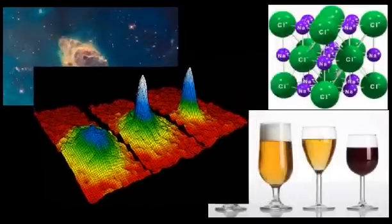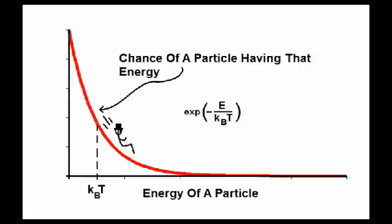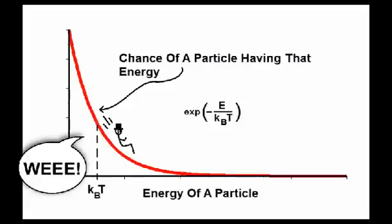You may ask, what exactly do I mean when I say that atoms in a hotter system have more energy? Physicists learned a long time ago that the energy distribution of particles at a given temperature follows something called the Maxwell-Boltzmann distribution. This just means that the energies of the particles are distributed according to the exponent of negative e over the temperature times the Boltzmann constant.